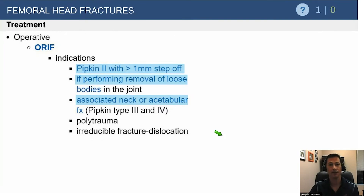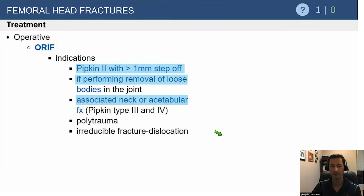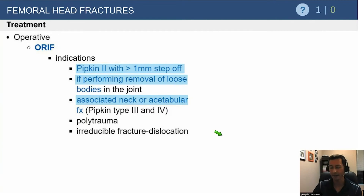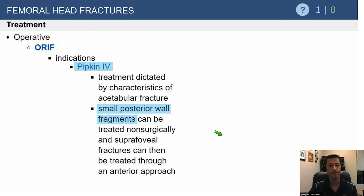Fix these if you have a fracture involving the dome — a Pipkin Type 2 displaced more than a millimeter or so — or if there are associated loose bodies, since you're already going in you might as well fix the femoral head fracture. Small infrafoveal fractures don't always need fixation. Pipkin Type 4 posterior wall fragments don't always need repair, and if you have a large femoral head fracture, you may be able to avoid going posteriorly and just fix it anteriorly.